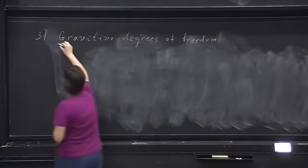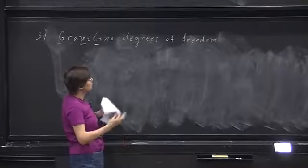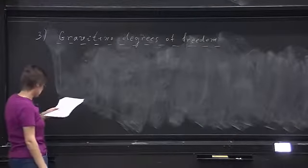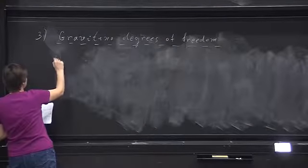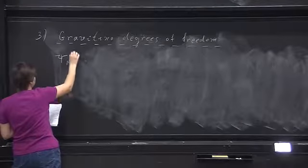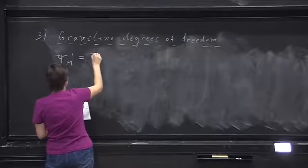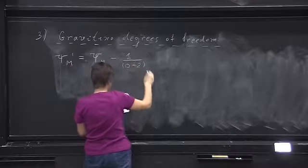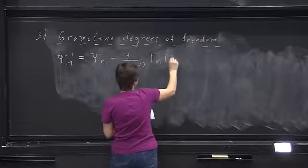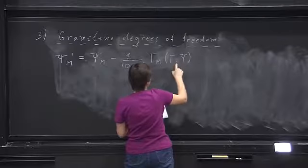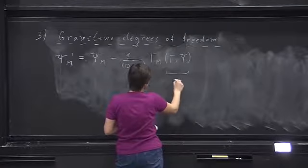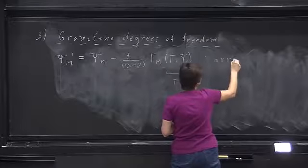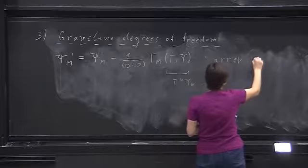I should say: what I said yesterday — I just briefly took a look in a book by Becker, Becker and Schwartz, 'String Theory and M-Theory' — but apparently that book was sloppy and not quite right. The irreducible representation, or the spinor irreducible representation, is a vector-spinor of the form gamma^n psi_n = 0. This is the irreducible representation that gives spin 3/2.